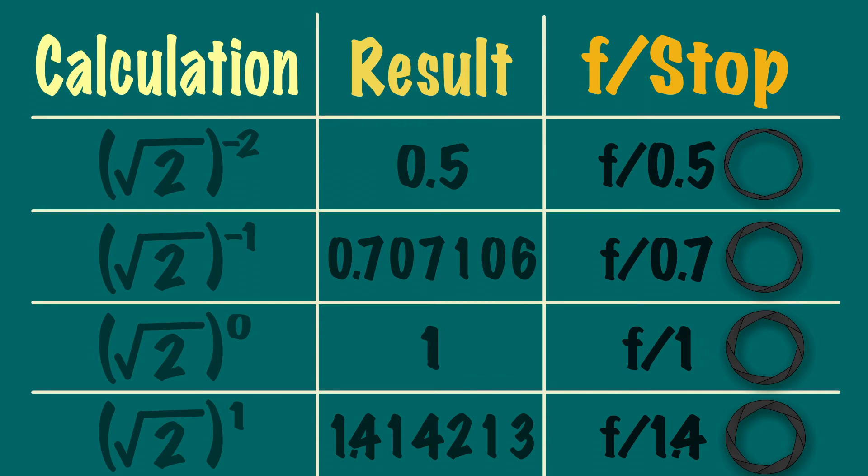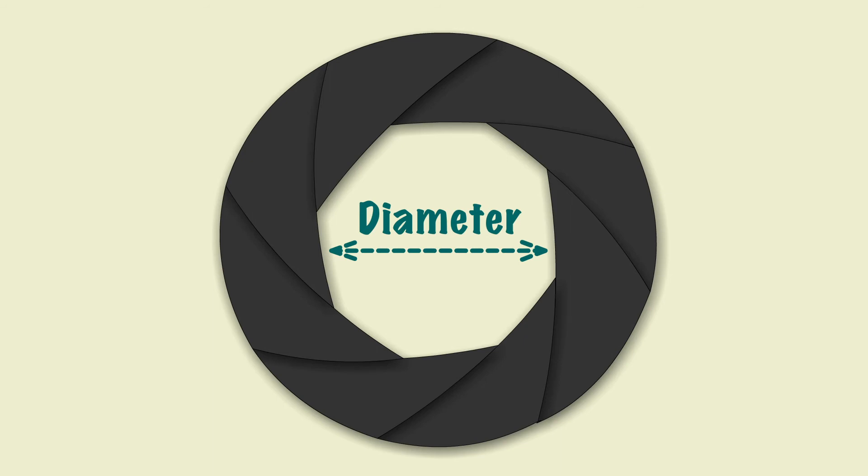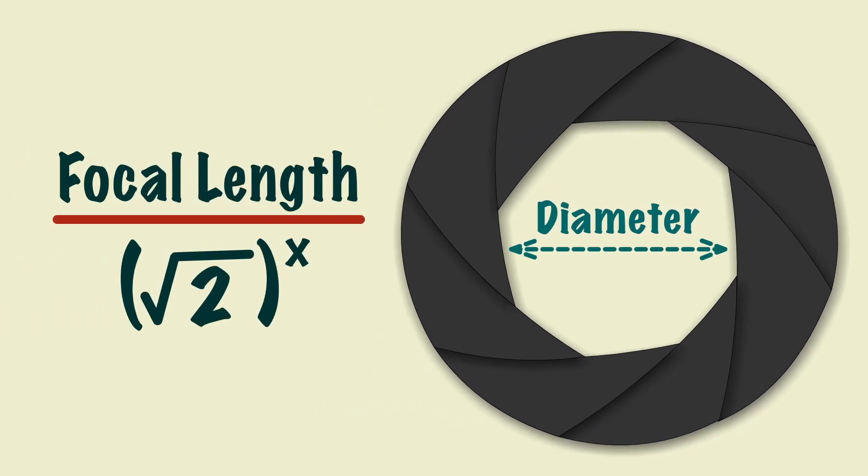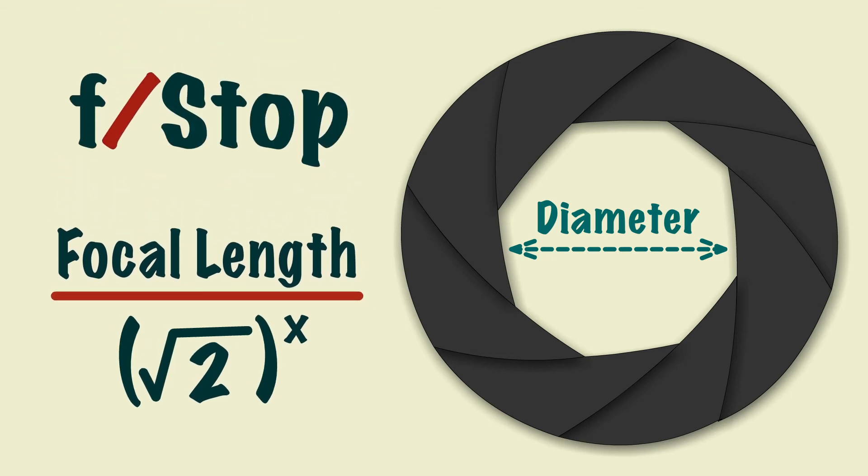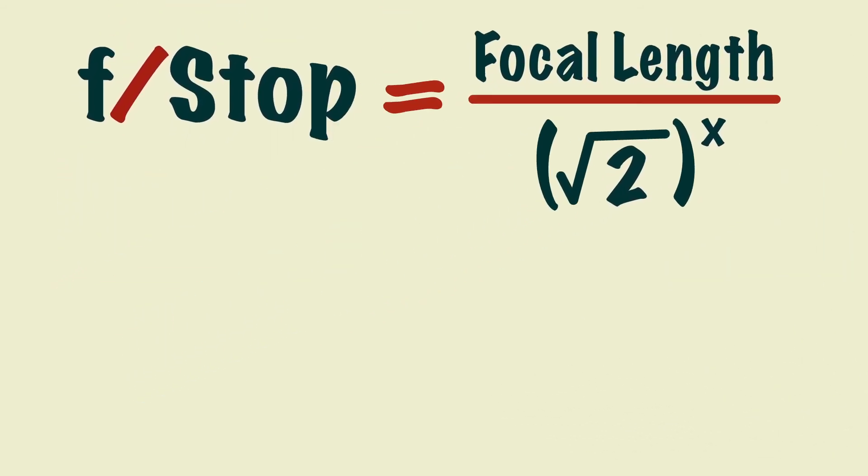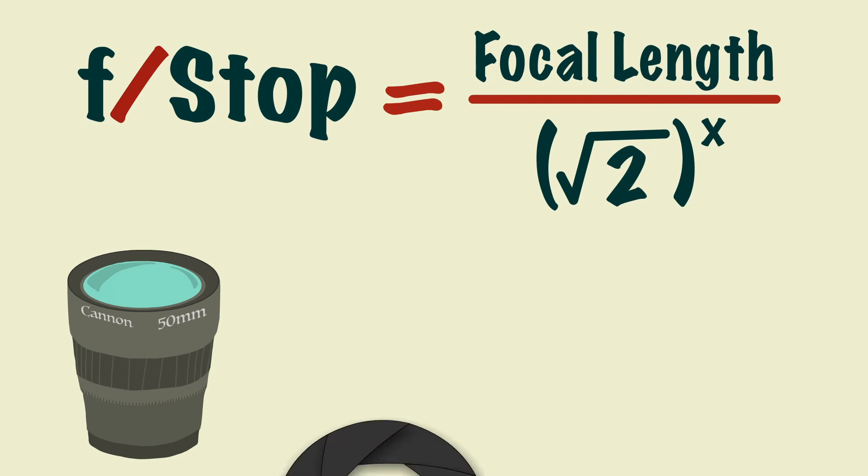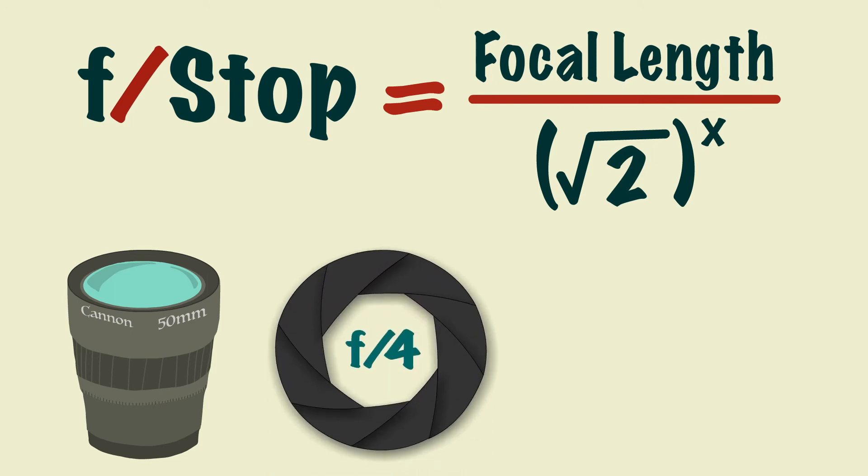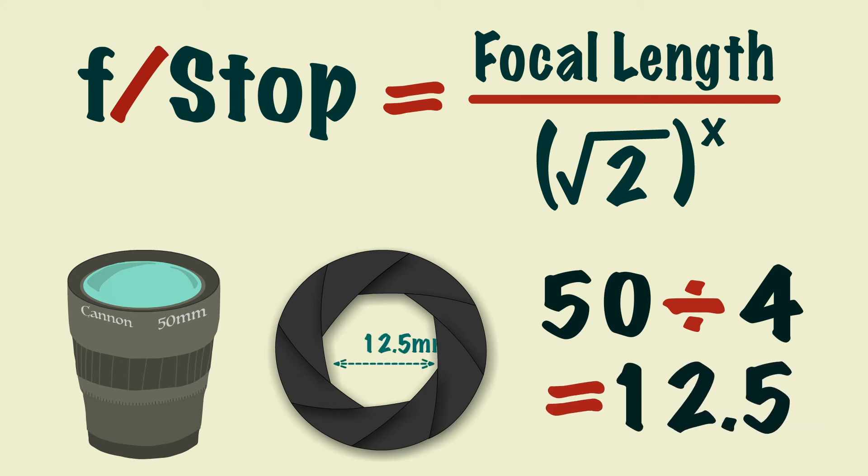These f numbers are also part of another formula used to work out the diameter of the iris. When we say f-stop, what this means is focal length divided by aperture. This is why f-stops are always written like this. So with a 50mm lens at an aperture of 4, the diameter of the iris will be 50 divided by 4, which gives you 12.5mm.